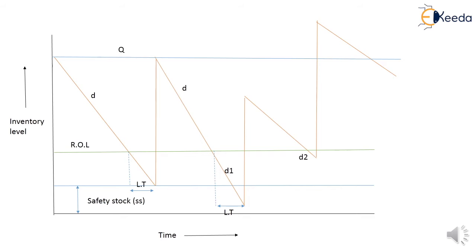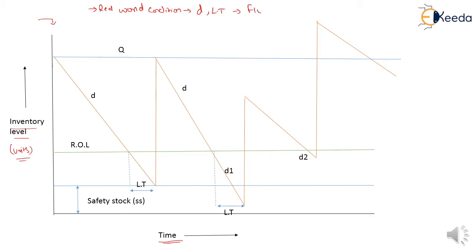Look at this graph. In this graph I represent all the processes of the probabilistic model. On the x-axis I represent time, and on the y-axis I represent inventory level in units. Basically the probabilistic model represents the real world condition in which the demand rate and lead time are fluctuating or variable.